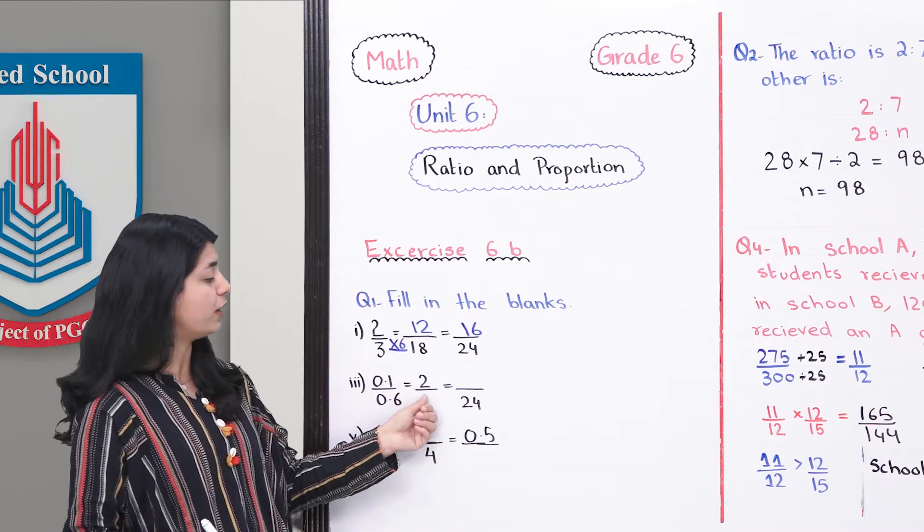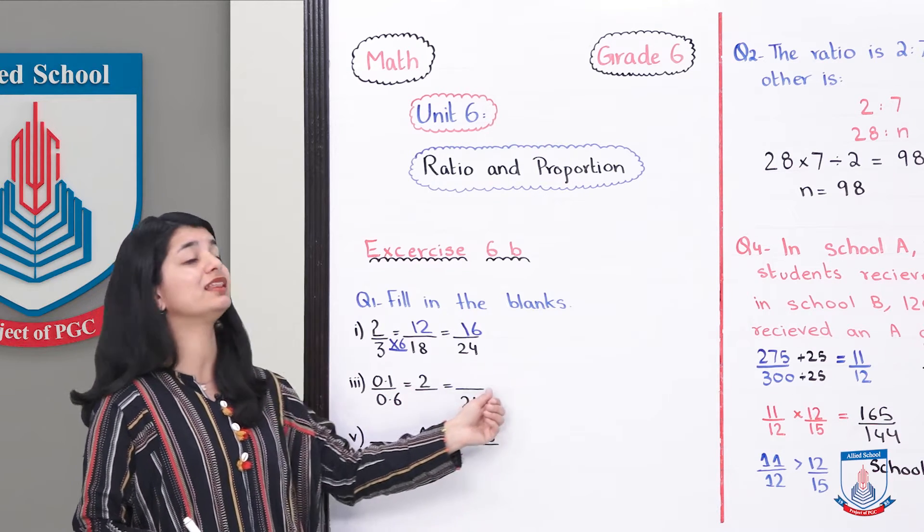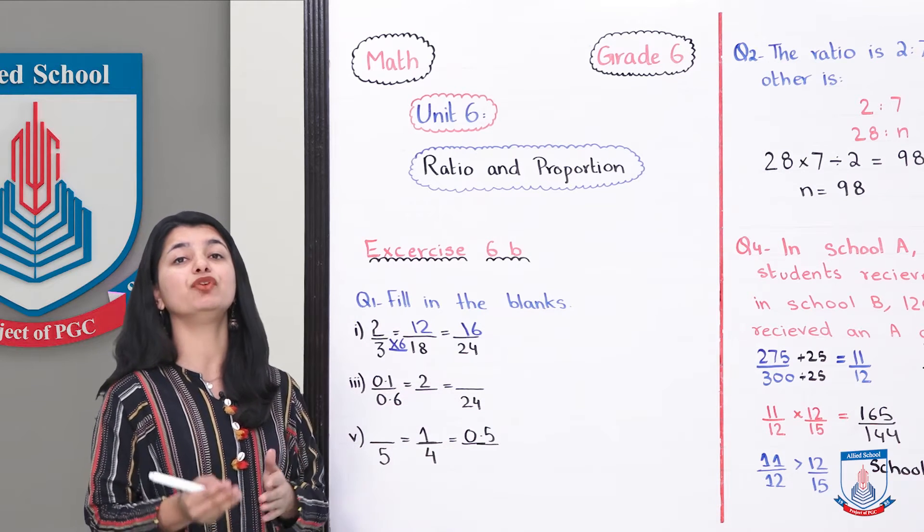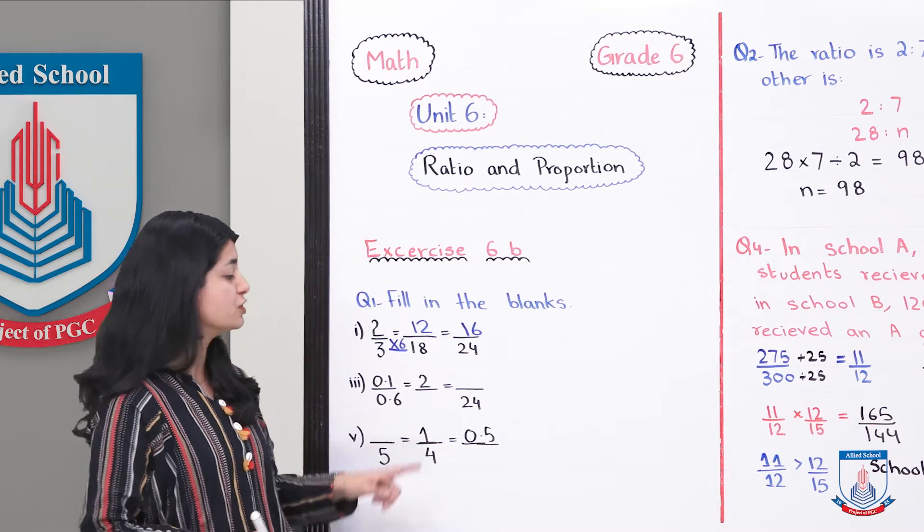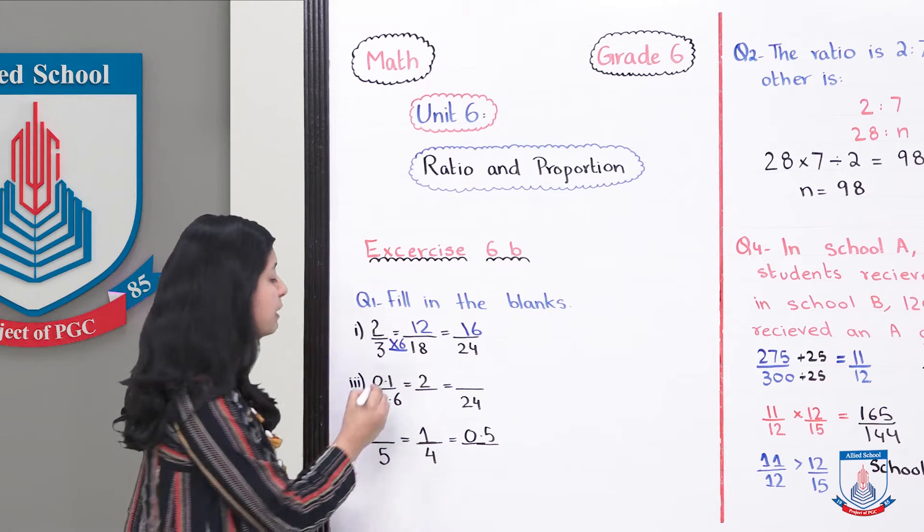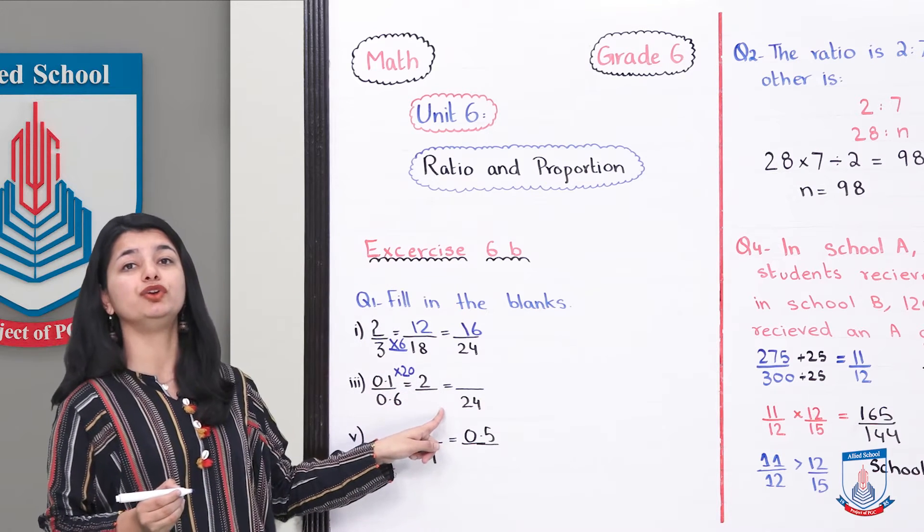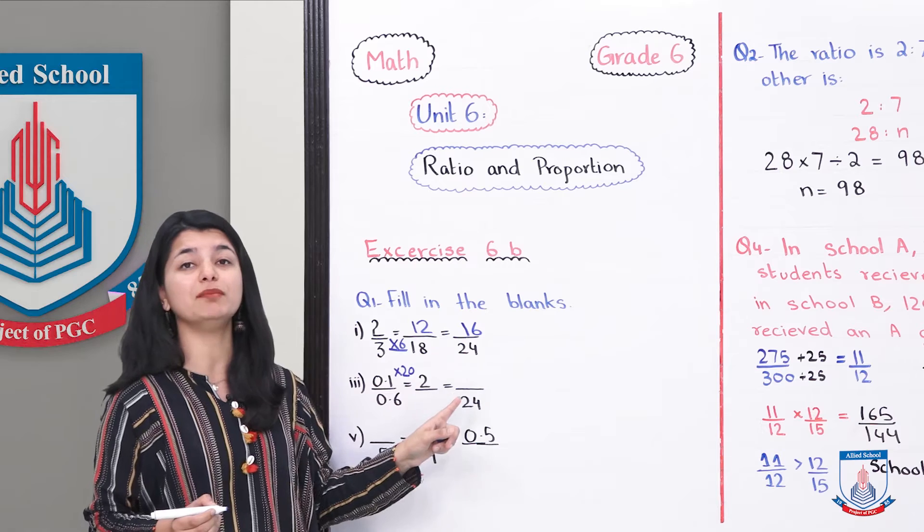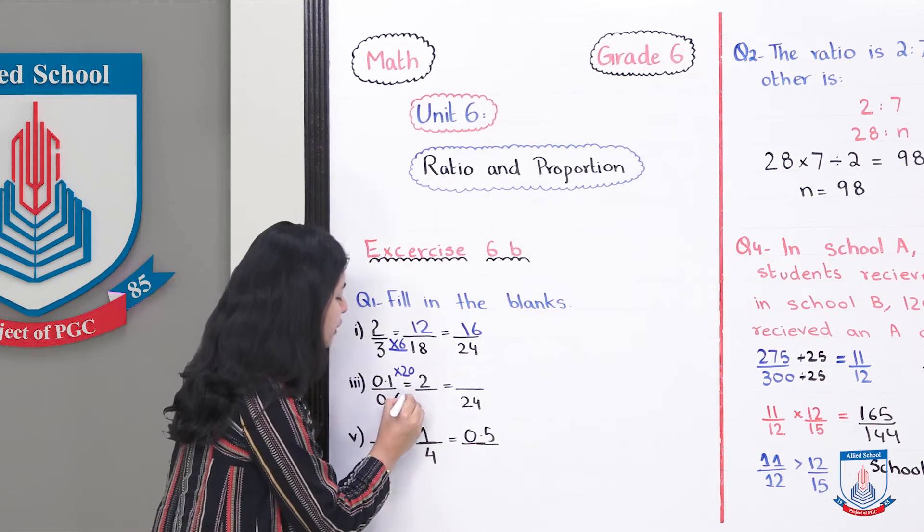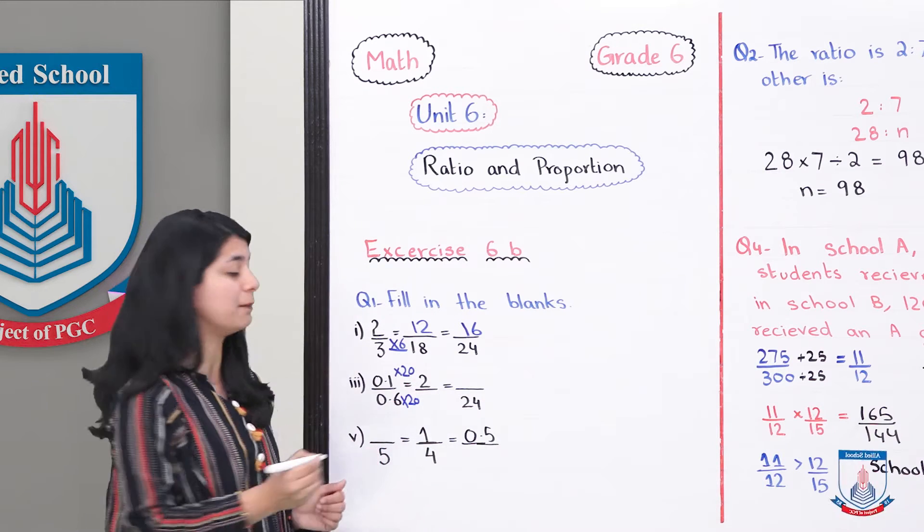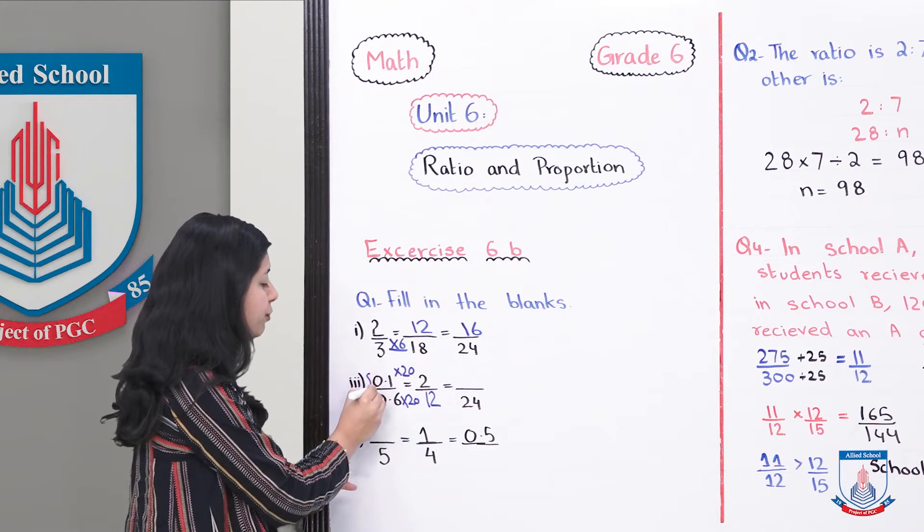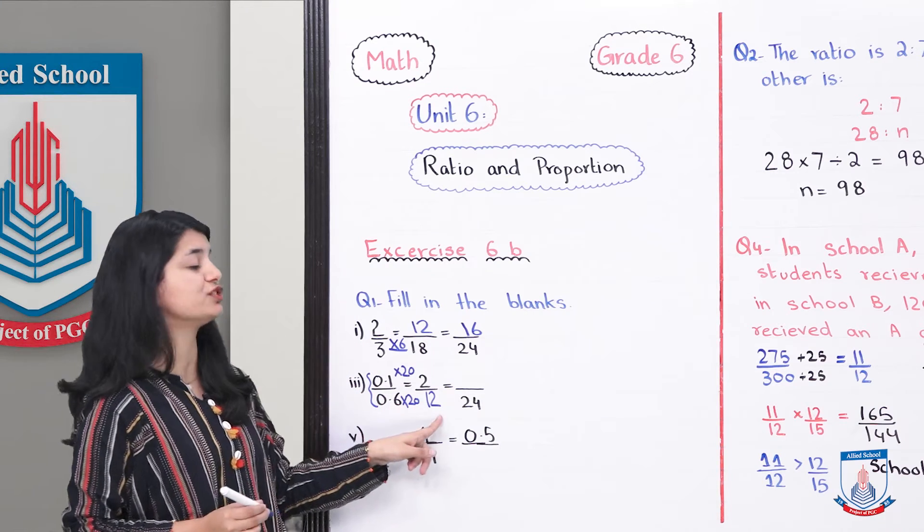Now let's see the second part. In the second part, they've given you a fraction with 0.1 and 0.6, and then you have to calculate these blanks. For this, 0.1 and 2, how are they related? You can divide them to see how these numbers are related. When you divide 2 by 0.1, your answer is 20. This means when you multiply 0.1 by 20, you get 2. Similarly, you have to multiply 0.6 by the same number, so you multiply it by 20 and you get 12.